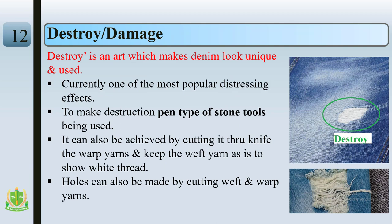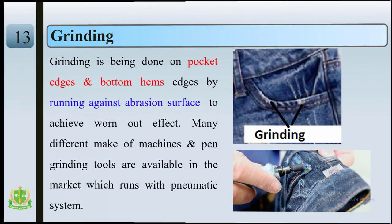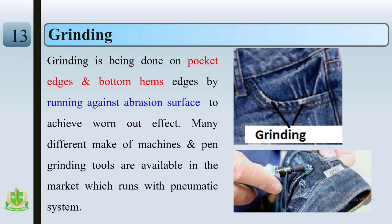Destroy or damage is an art which makes denim look unique and is currently one of the most popular distressing effects. A stone tool is used to make destruction. To create this effect on garments, we destroy the warp yarn while keeping no change in the weft layer.